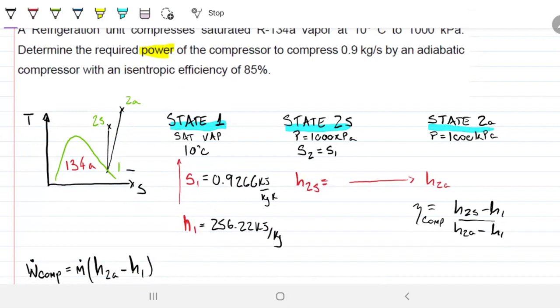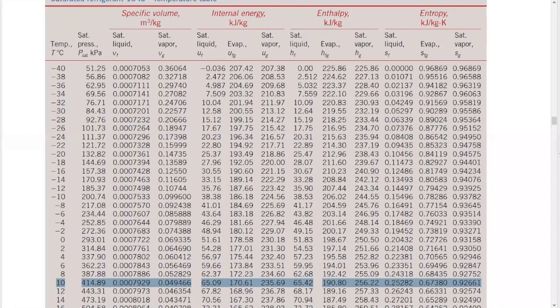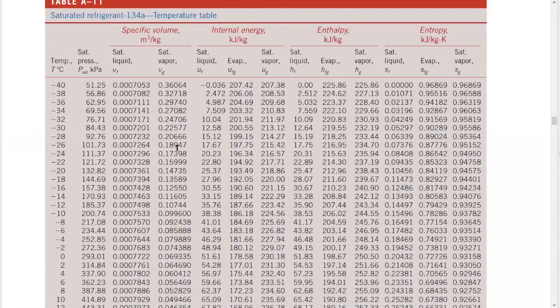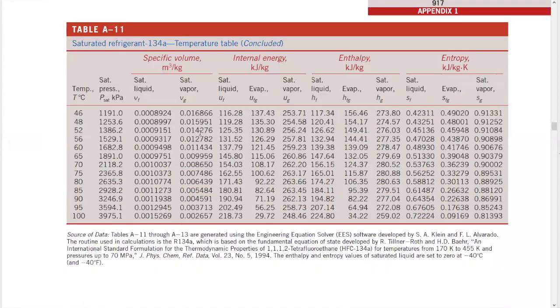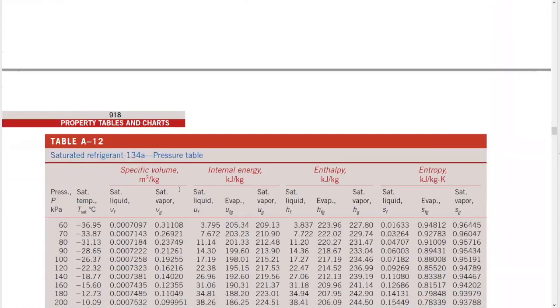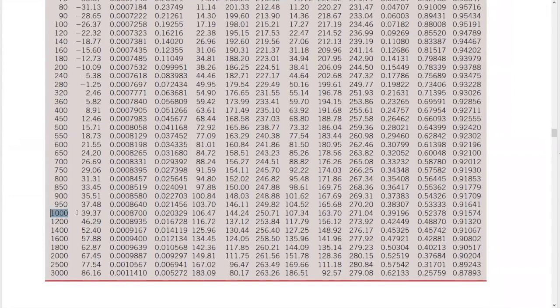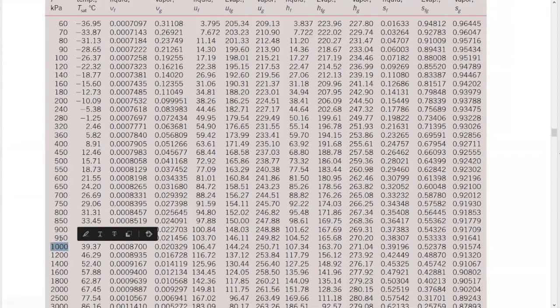Now that I have my entropy, I have the state 2 completely defined, okay? I'm going to have to do a little interpolation. But you guys know how to do that better than I do. So we're going to look first at 1,000 kilopascals on the pressure table. So not this table. Temperature table, nope. Pressure table. 1,000 kilopascals. So that's our second state.